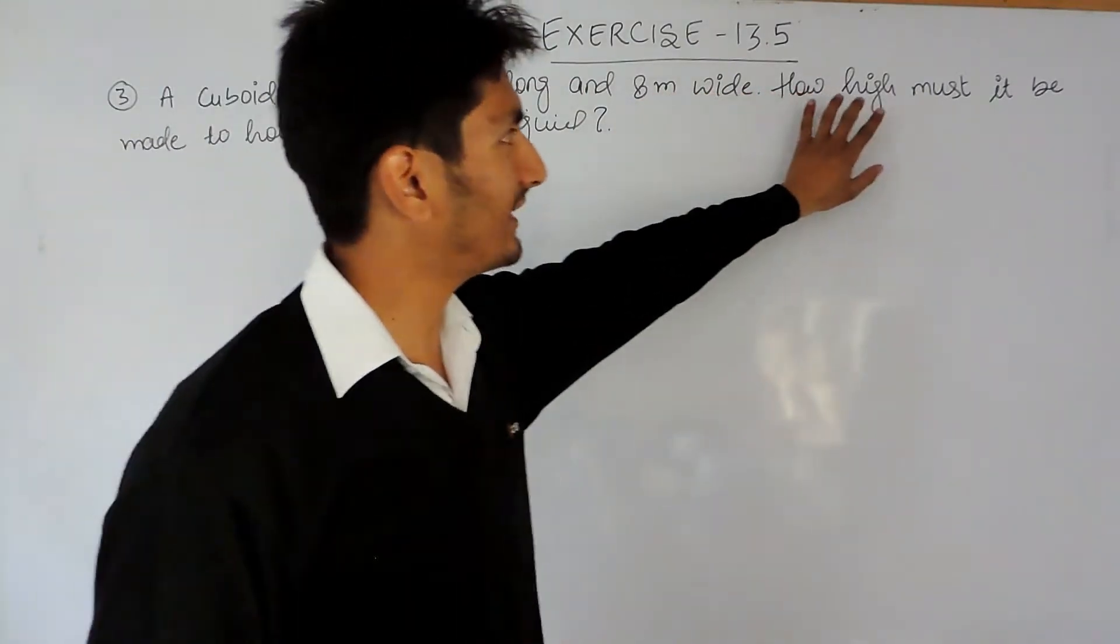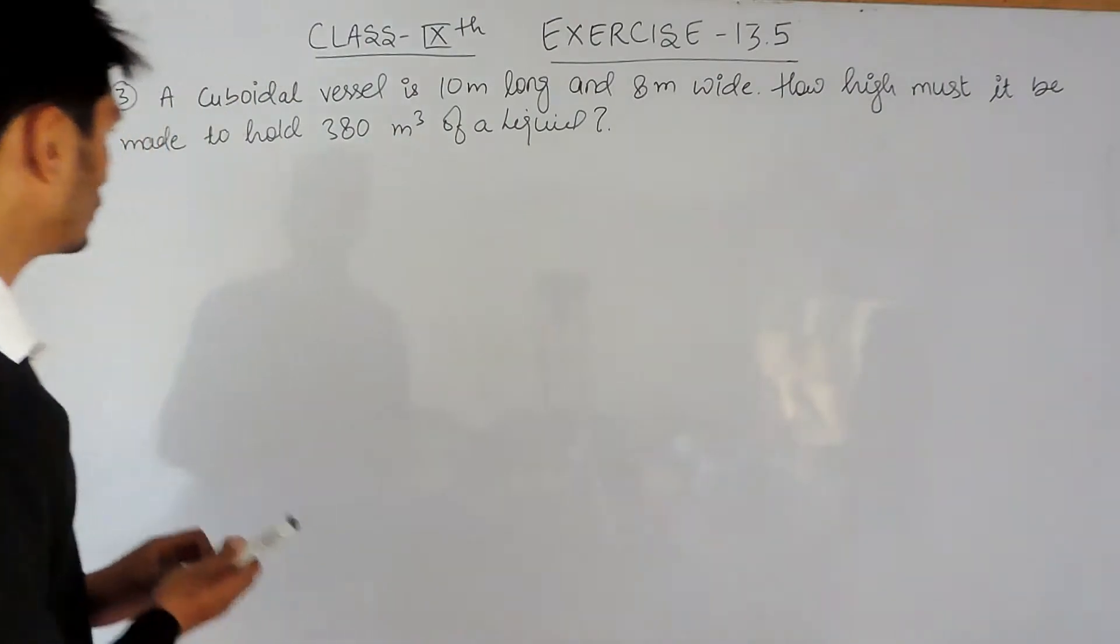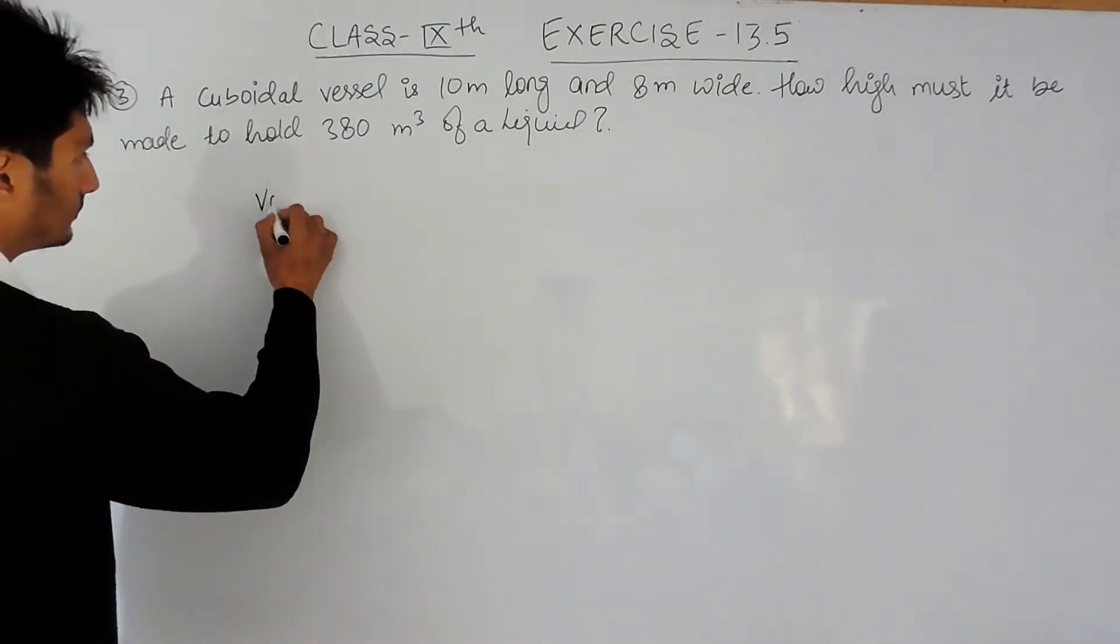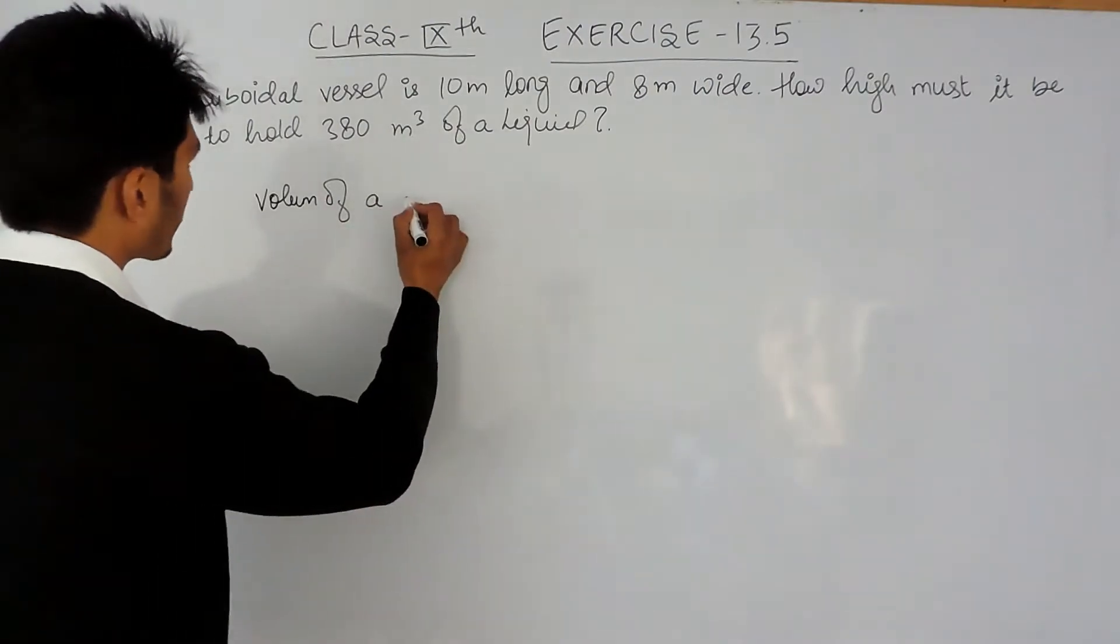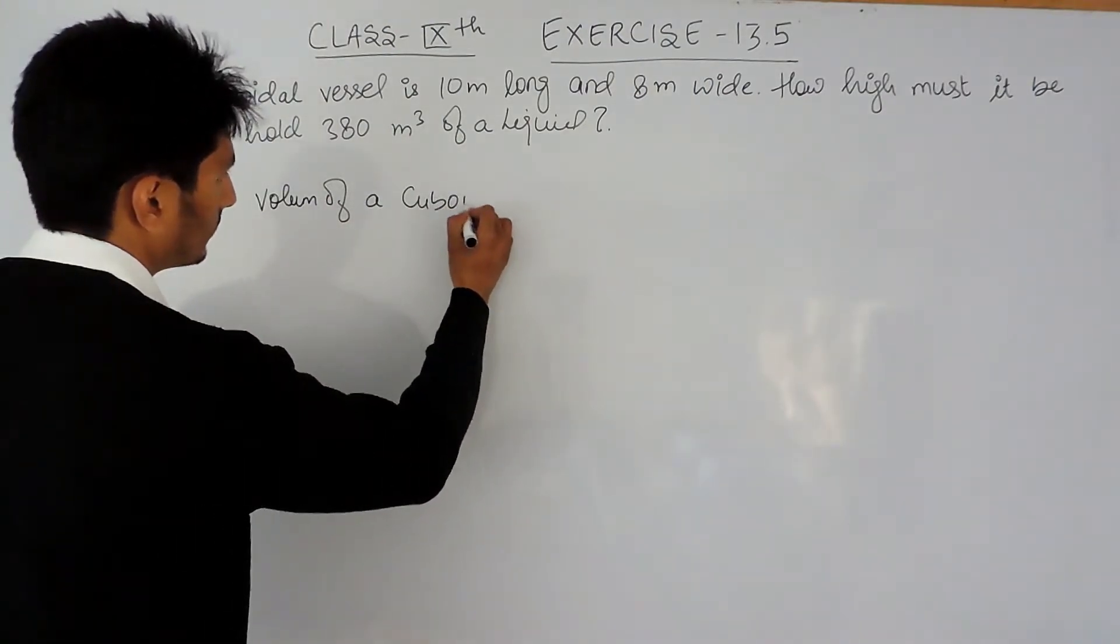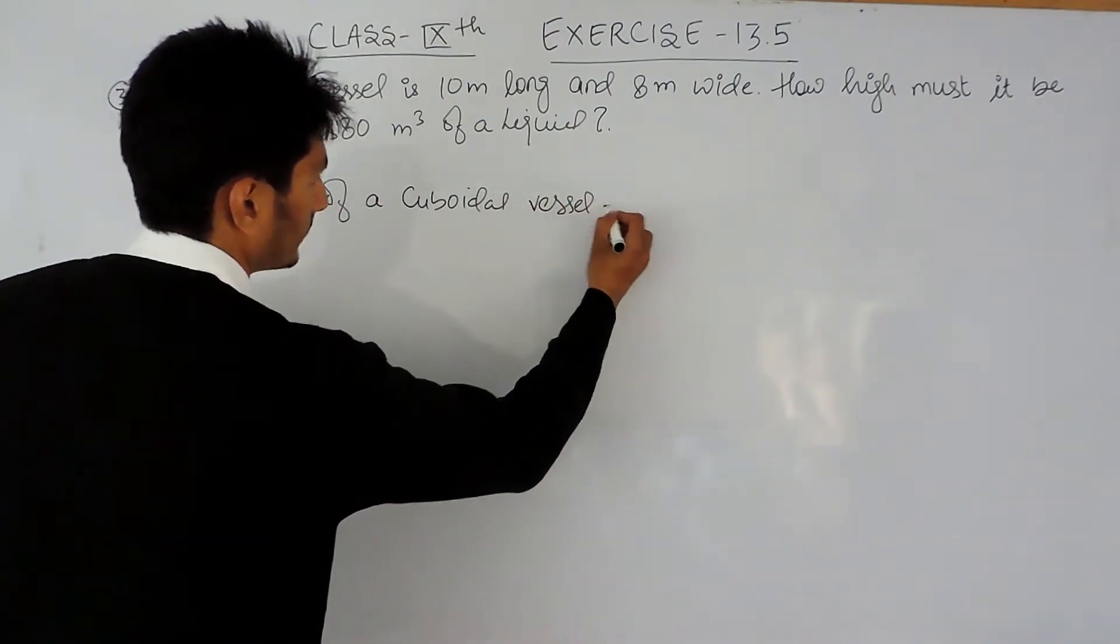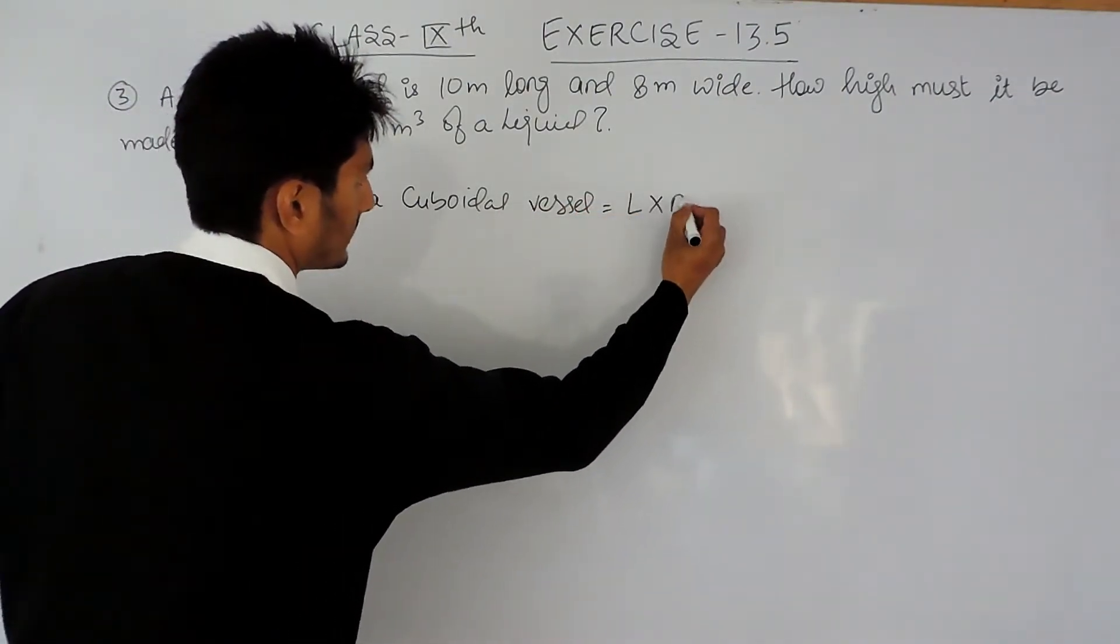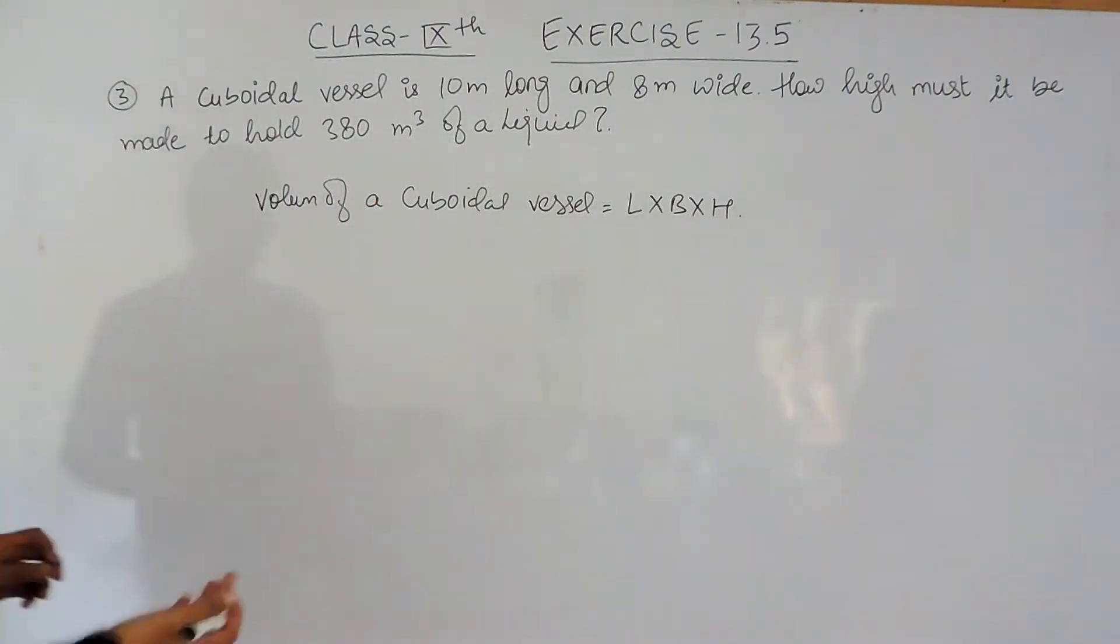So volume of a cuboidal vessel is length multiplied by breadth multiplied by its height. Because this is a cuboid, and the volume of a cuboid is L × B × H.